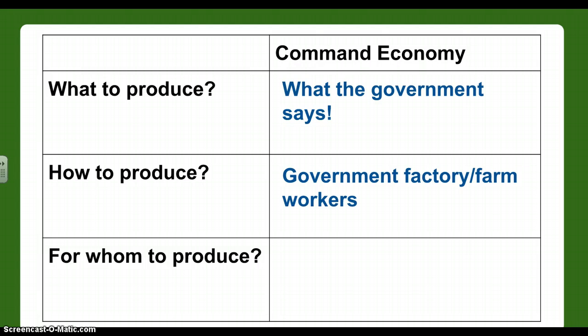How you produce it in a command economy is through government factory or farm workers. These people are all employed by the government and told to work in one position or another. It's militaristic — all about keeping the military functioning. We need weapons, clothes for the military — that's where factory workers come in — and food for the military — that's where farm workers come in.